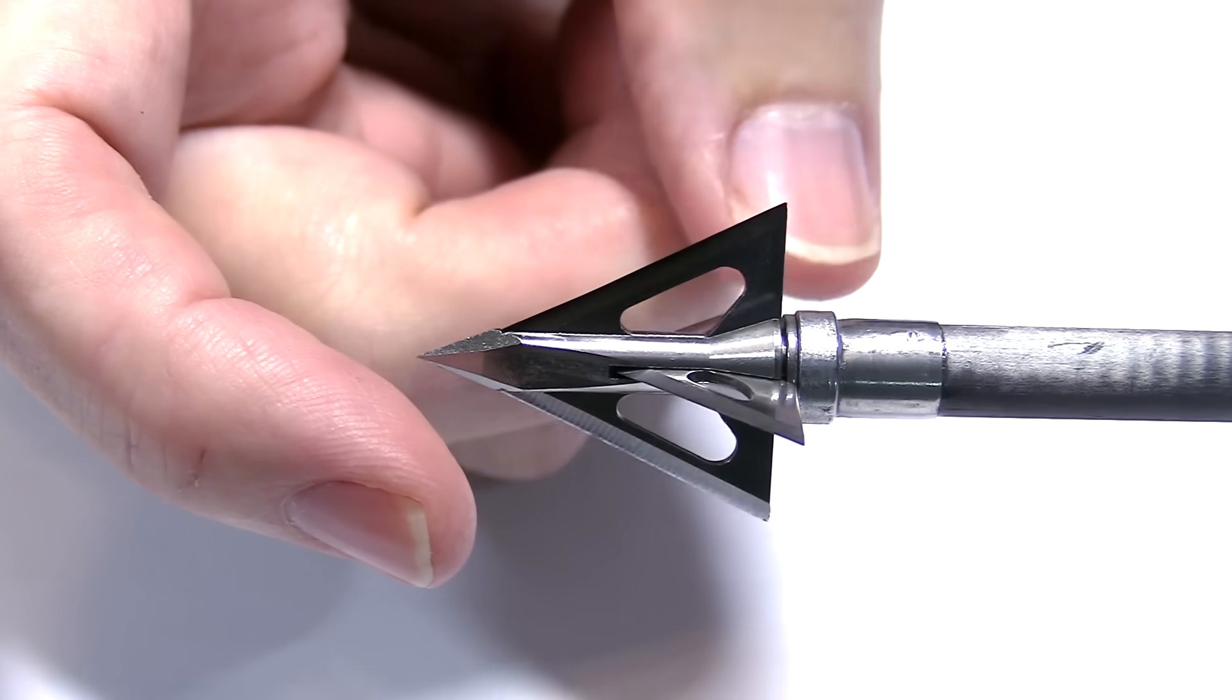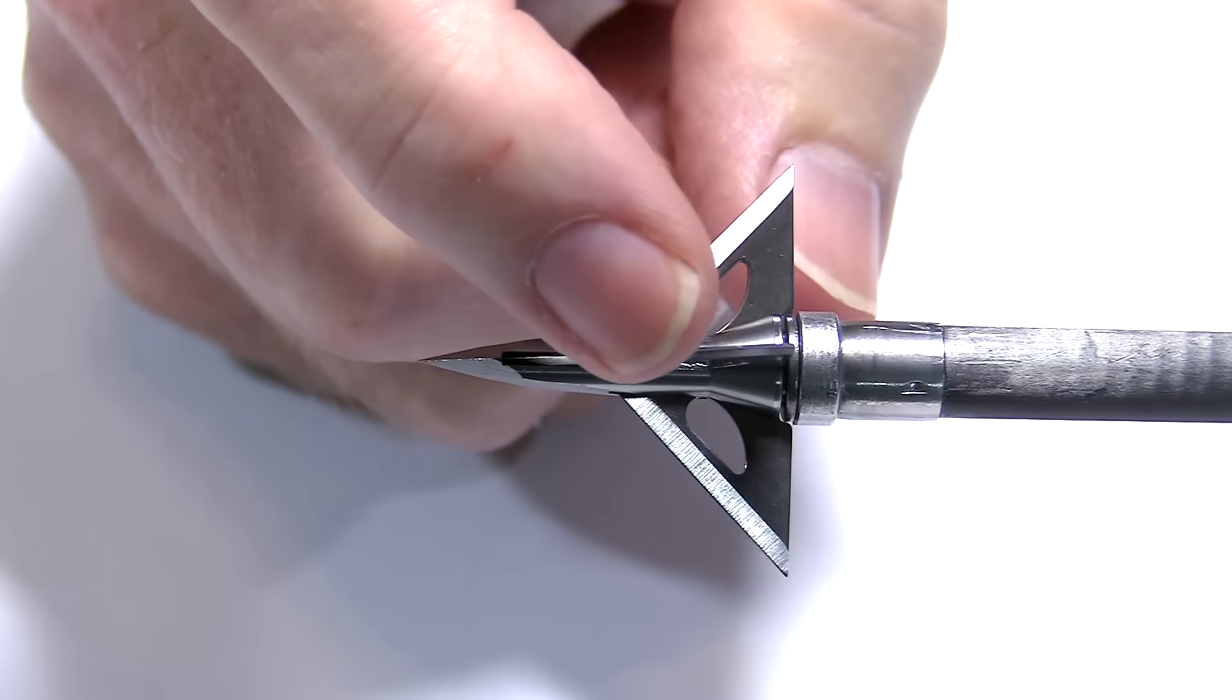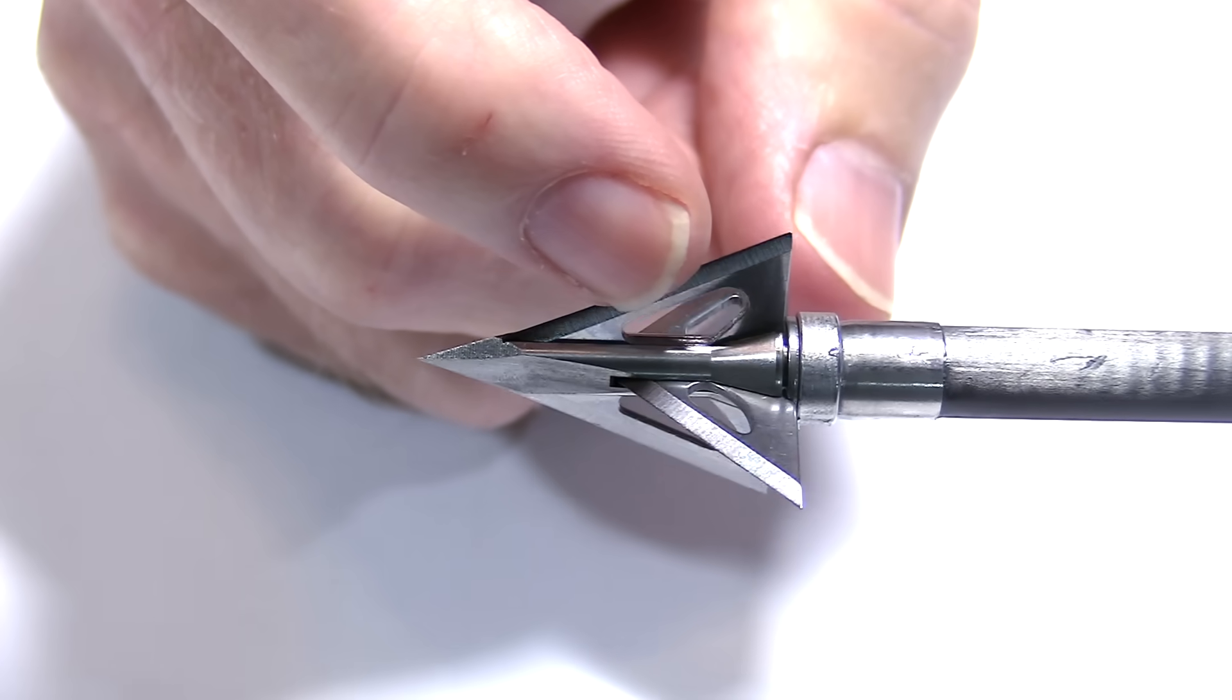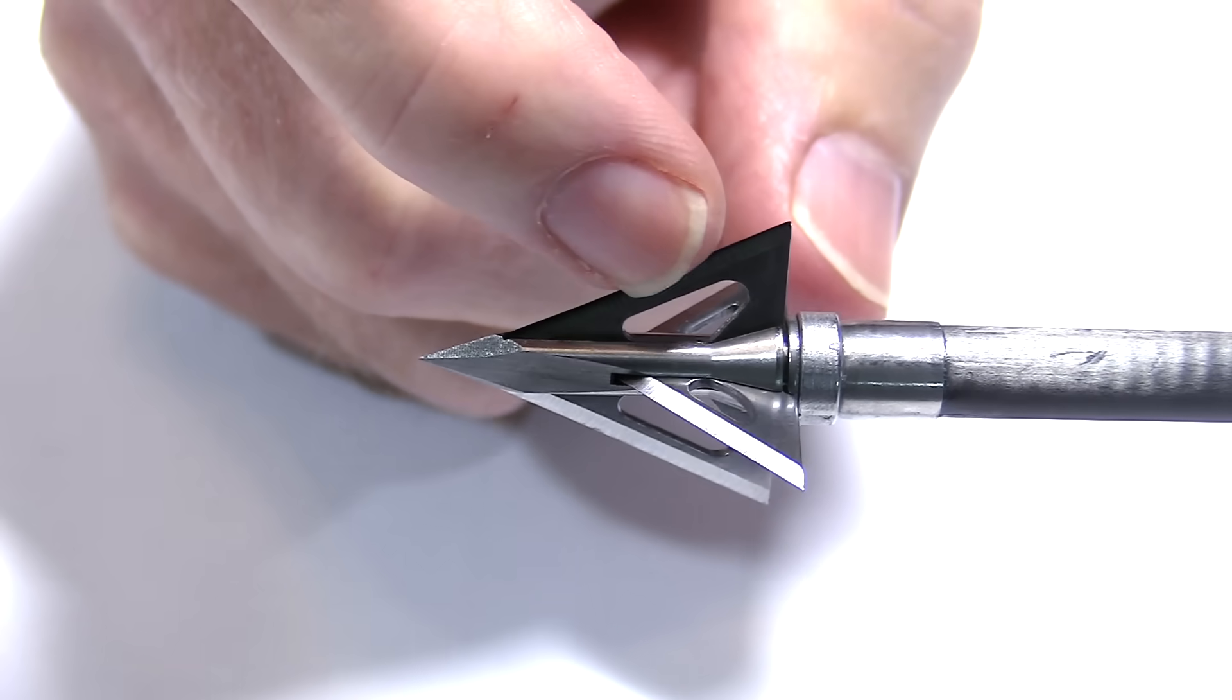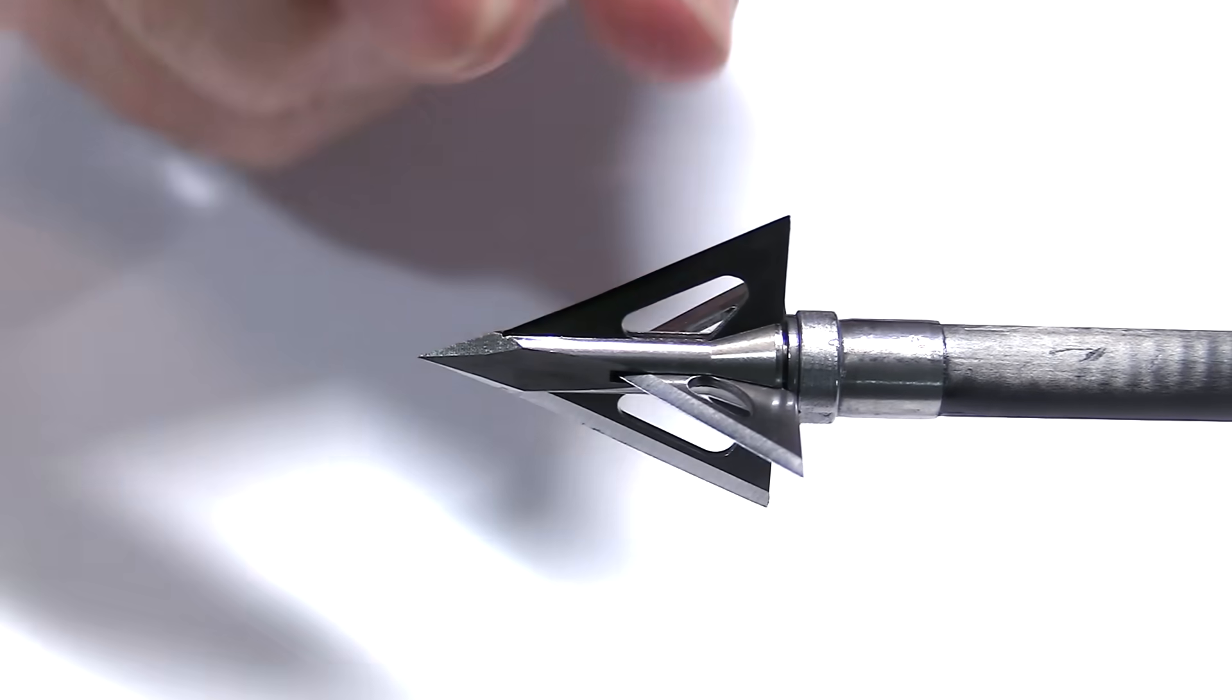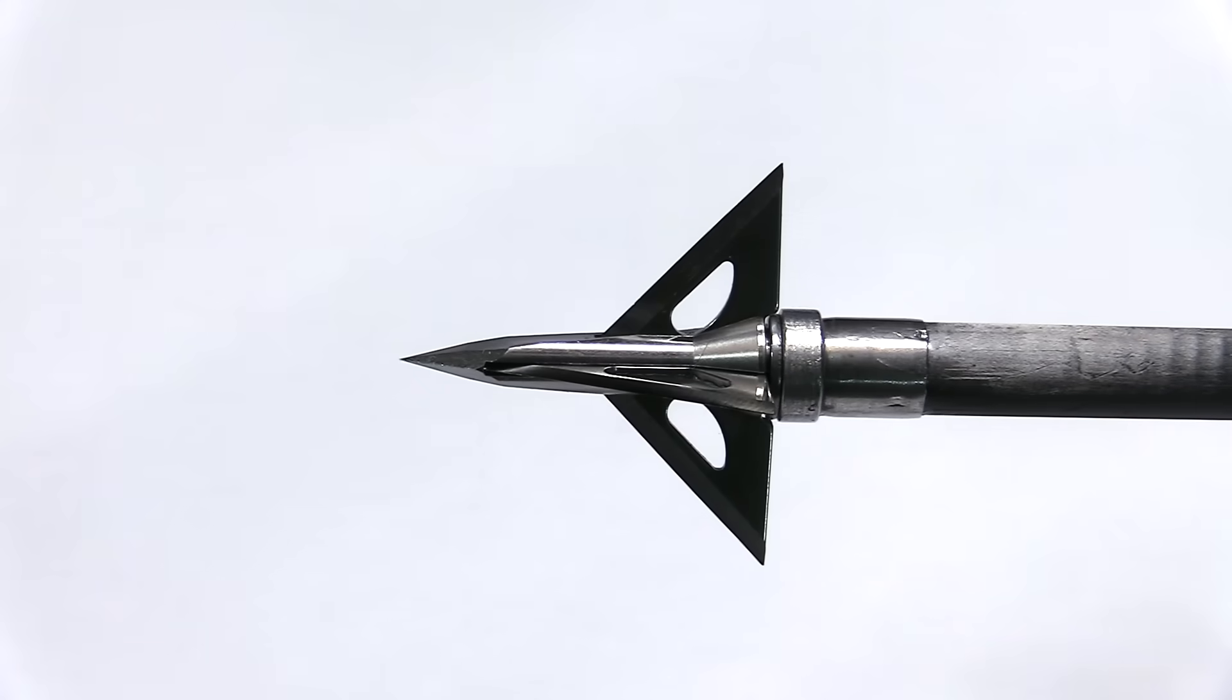So for resharpening, I would use the Stay Sharp Guide Gray Guide for this. It would work really well with actually any of the Slick Tricks. I believe the Gray Guide would work well. And the price for these, a pack of three, is $47.99. Really eager to put this head to the test and see how it performs.